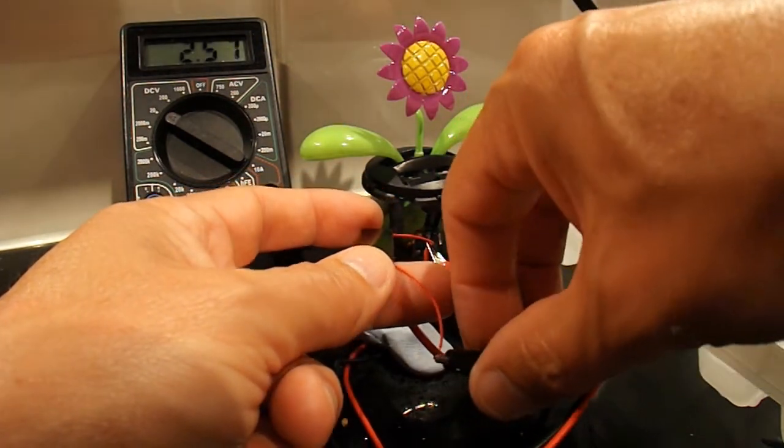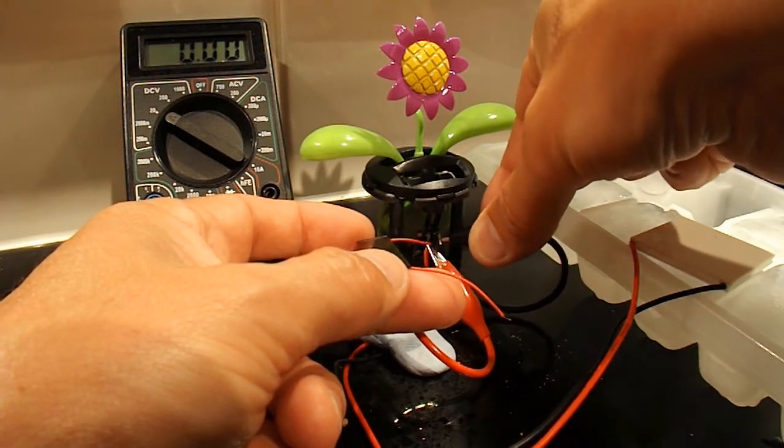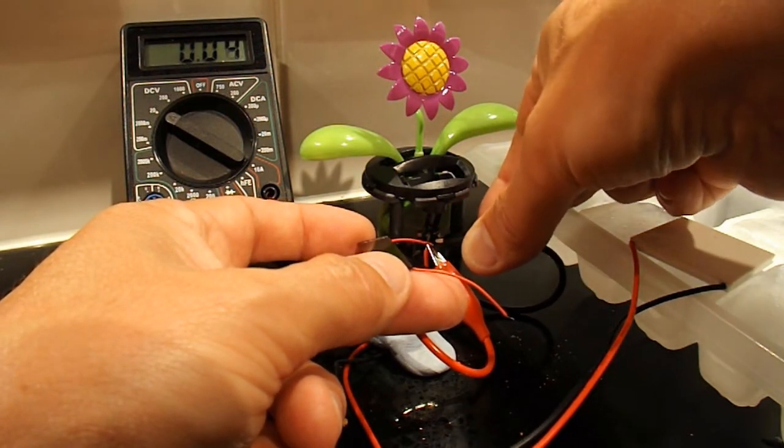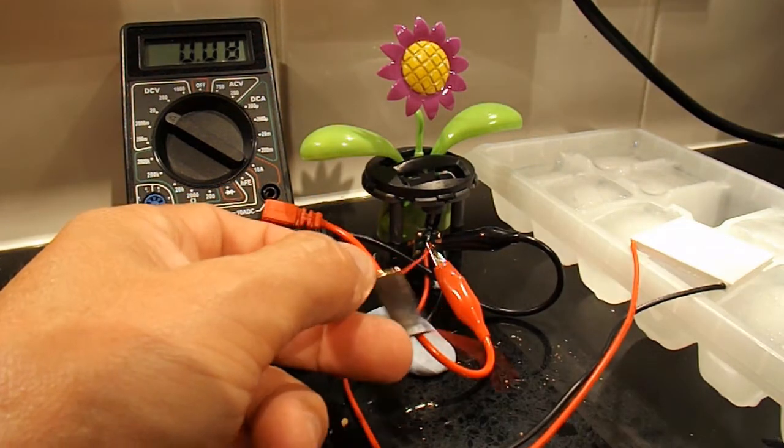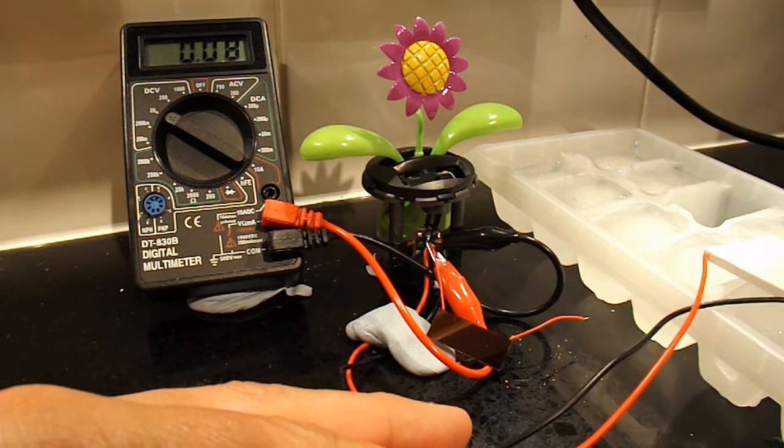Whereas if I go across the Peltier cell that I've carefully soldered onto the flower, that's 80 millivolts at the moment.